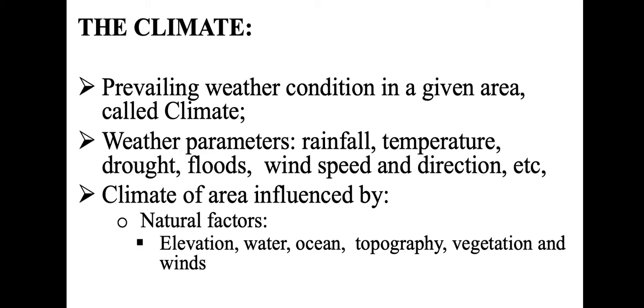The prevailing weather conditions in a given area — this is more like the average after a long time. For example, January to February it rains, and then March, April, May it's dry. In general, the weather conditions in the southern hemisphere between June to August, it's cold. So we define climate as the prevailing weather conditions in a given area.